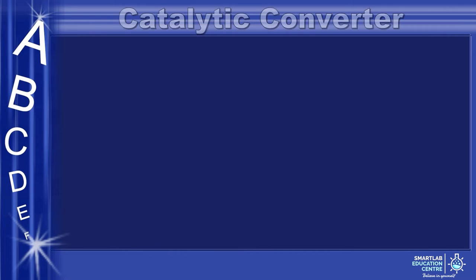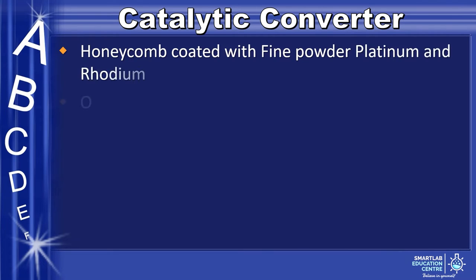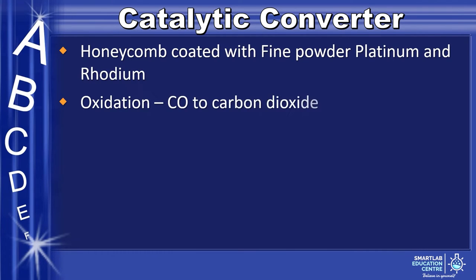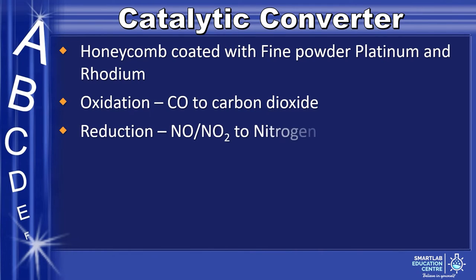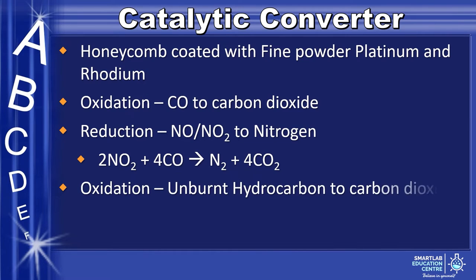Catalytic converters have a honeycomb coated with a fine powder of platinum and rhodium. It involves oxidation where carbon monoxide is oxidized to carbon dioxide. It also involves reduction of NO or NO₂ to nitrogen, as seen in the equation below, and oxidation of unburnt hydrocarbons to carbon dioxide and water, as seen in the equation below.